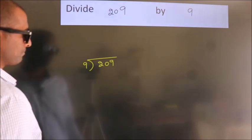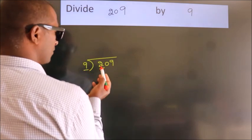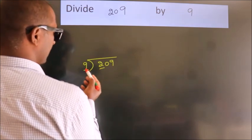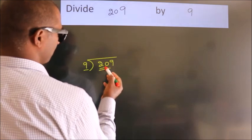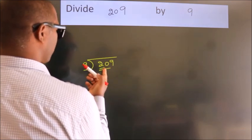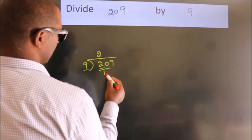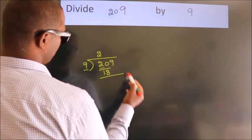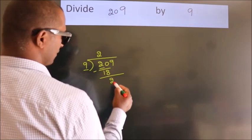Next, here we have 2. Here 9. 2 is smaller than 9, so we should take 2 numbers: 20. A number close to 20 in the 9 table is 9 times 2, which is 18. Now we subtract. We get 2.